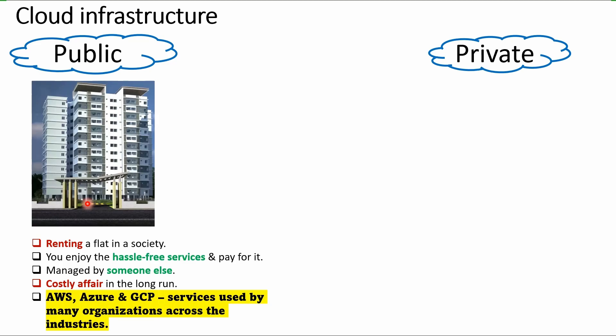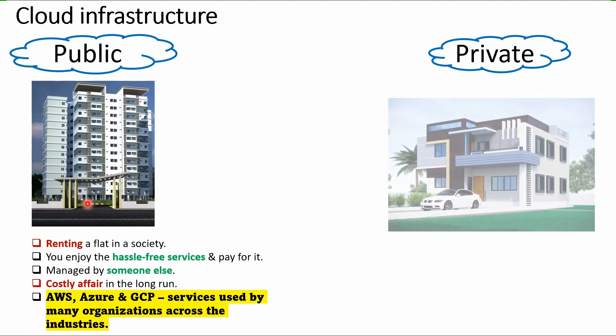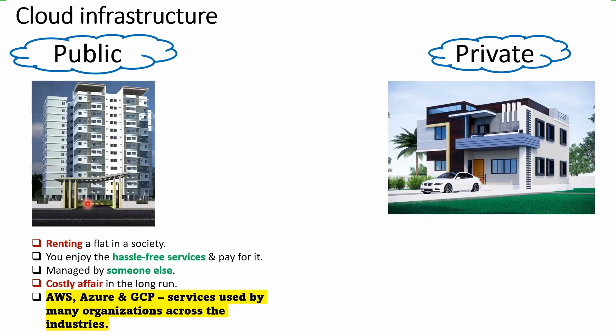AWS, Azure, and GCP fall under this category. Their services are used by many organizations across industries — particularly organizations that have a software-based product but do not want to establish their own infrastructure for any reason. Now comes the private side of cloud infrastructure.